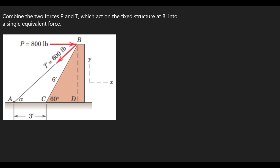When you look at force T, it makes an angle with the Y and X axes. But for force P, it lies directly on the X axis. So to be able to find the resultant, we will need the components of force T. So first of all, let's find the components of force T. Before you can find them, you must know the angle that force T makes with either the X or Y axis.